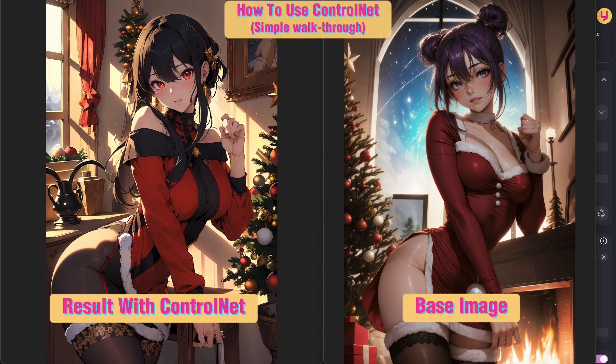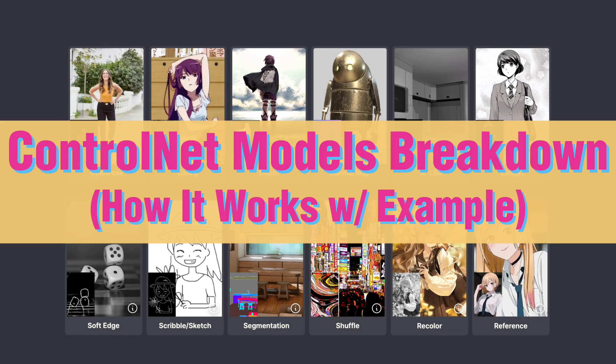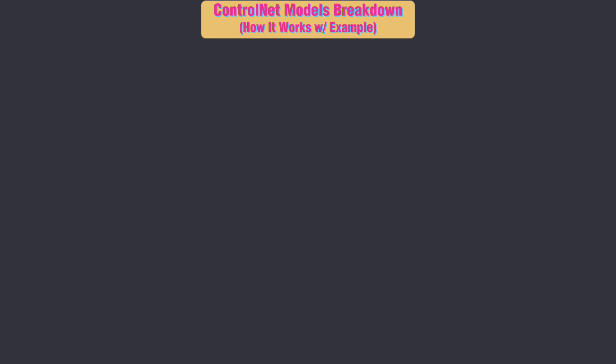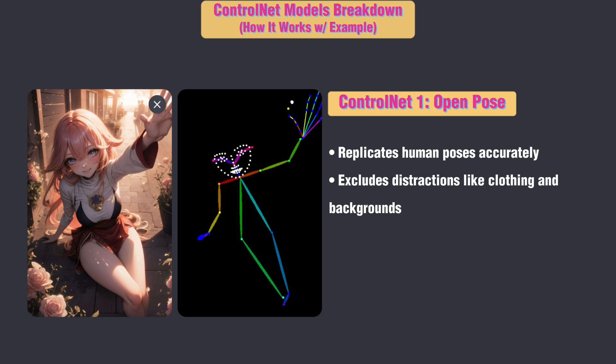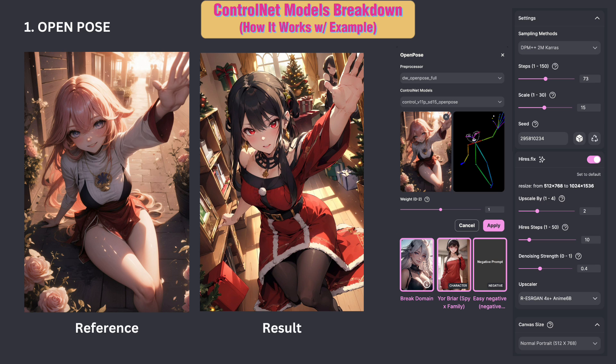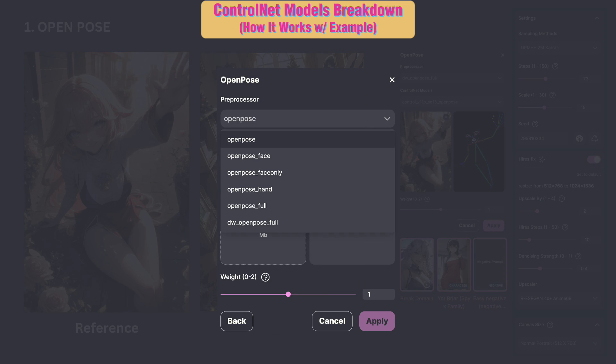Isn't that just awesome? Now let me break down each ControlNet model and help you choose the one that suits your needs best. ControlNet 1: Open Pose. This ControlNet replicates human poses accurately, excluding distractions like clothing and backgrounds. Perfect for capturing simple and elegant poses. Various Open Pose processors are available, and you can select one based on your preferences.